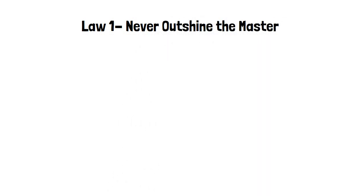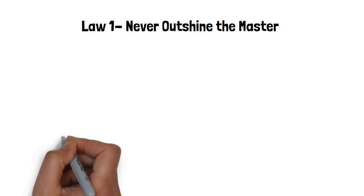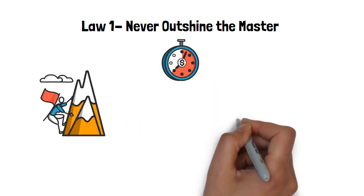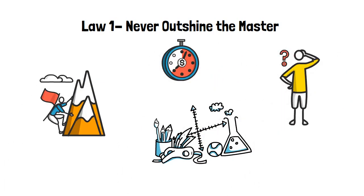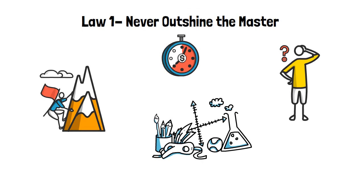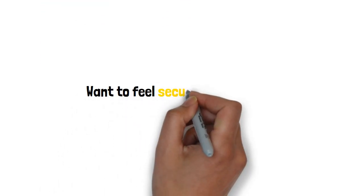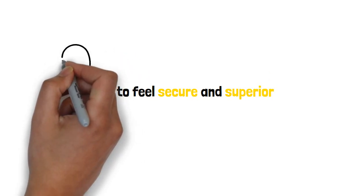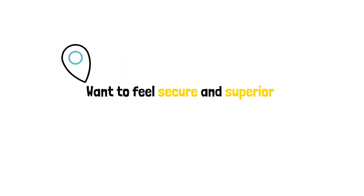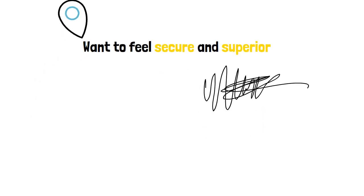Law 1, never outshine the master. Always make your masters appear more brilliant than they are and you will attain the peak of power. Don't show the limits of your own talent so you don't make your masters feel insecure. In essence, the better you make your superior appear, the greater the level of power you will get. This is because those above you want to feel secure and superior in their own positions. You can achieve this by making a few harmless mistakes so you can ask for your superior's guidance.